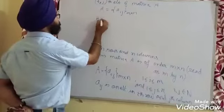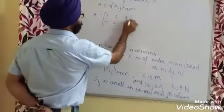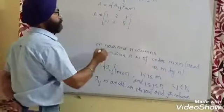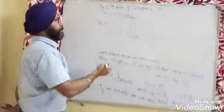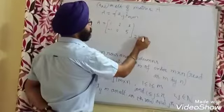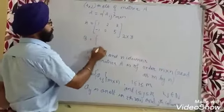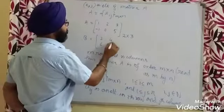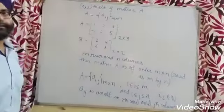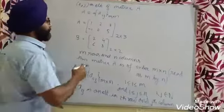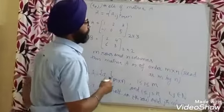For example, suppose we have a matrix with entries 1, 2, 3, -1, 0, 5. There are two rows and three columns, so we write the order as 2 by 3. If we take matrix B with entries 2, 4, 6, 8, there are two rows and two columns, so the order is 2 by 2. That is how we write the order of matrices.